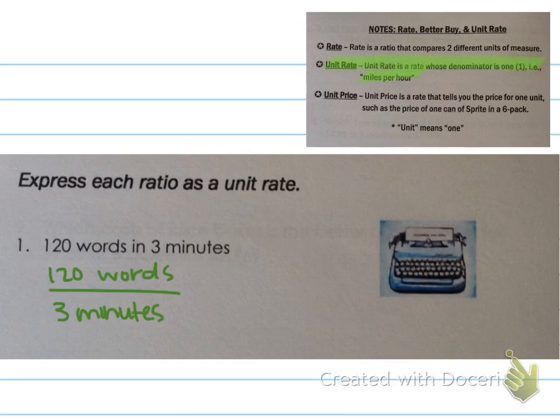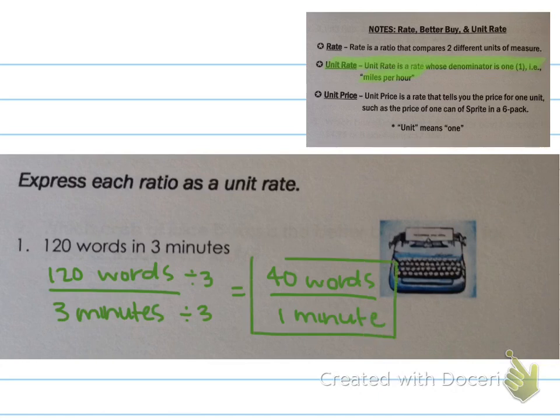So I want to get a one on the bottom. How do I make three equal one? Well, I divide by three. And whatever I do to the denominator has to be done to the numerator, so I also divide by three. 120 divided by three is 40. So that's 40 words over. And then three divided by three is one. And that was minutes. So we have one minute, 40 words in one minute. That is our unit rate because we have a denominator of one.